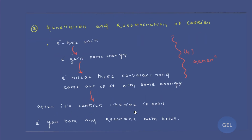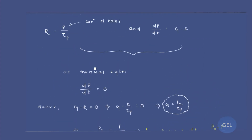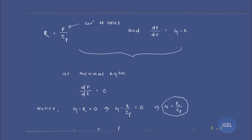After the carrier lifetime is over — note there is a difference between carrier lifetime and relaxation time — the electron goes back and recombines with holes. This process is called recombination. Now we analyze the formulas: recombination R = p/τ_p, where p is the concentration of holes and τ_p is the carrier lifetime. Also, dp/dt = g − r, representing the rate of change in hole concentration.